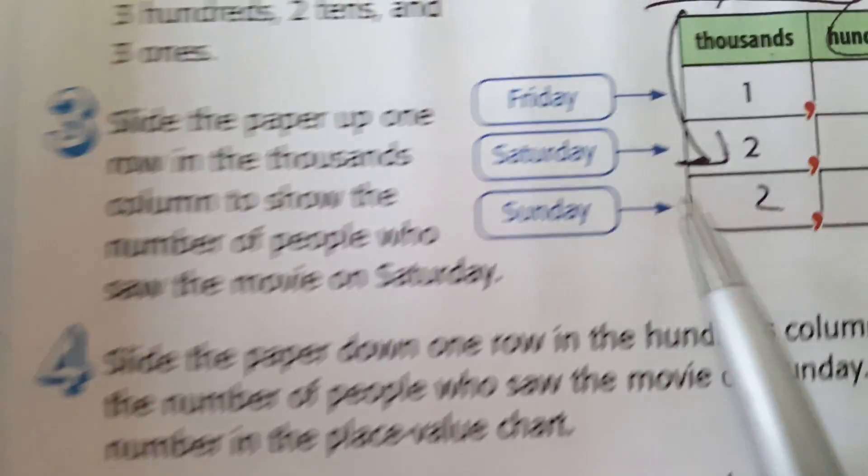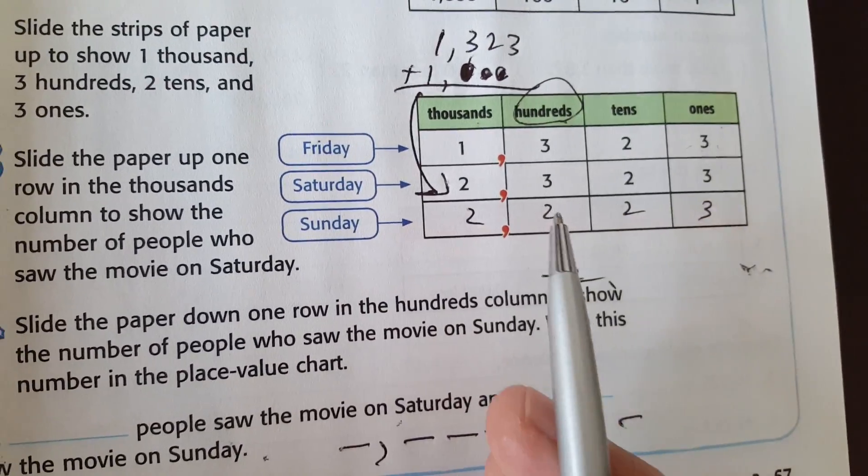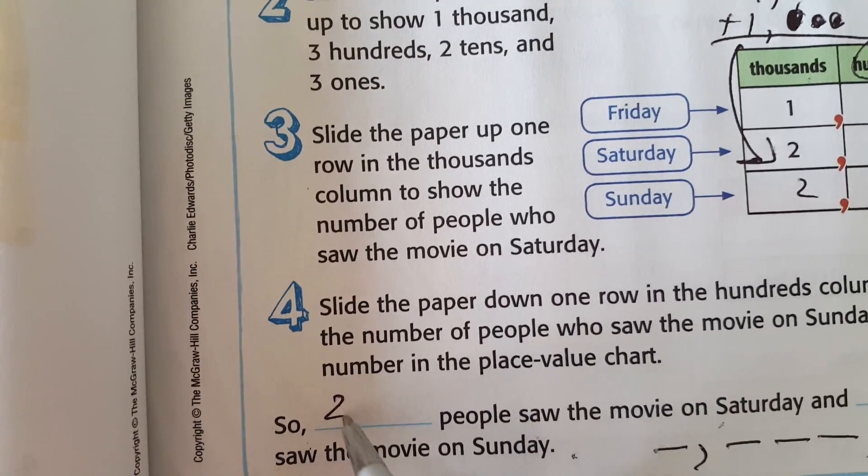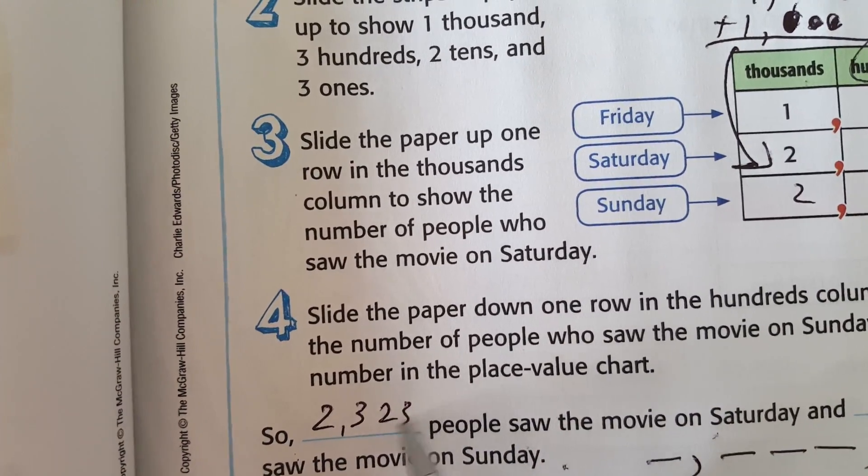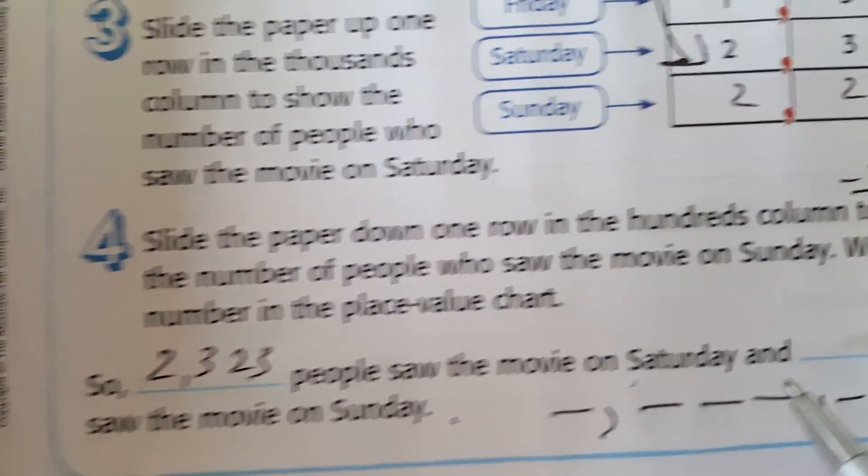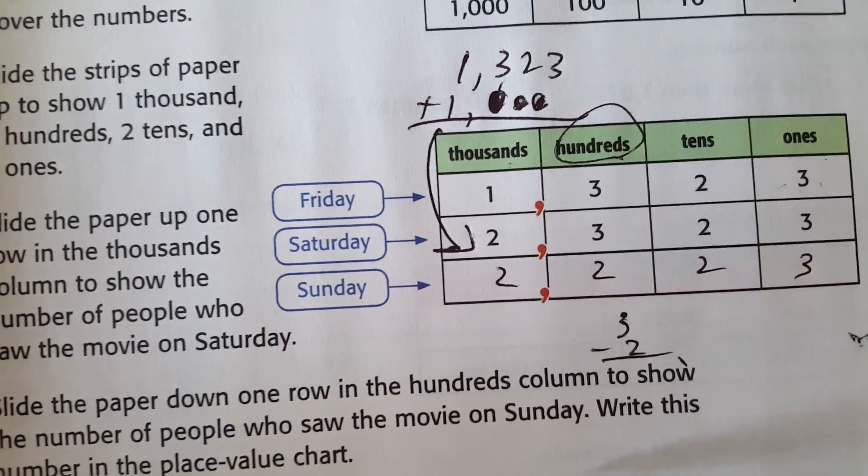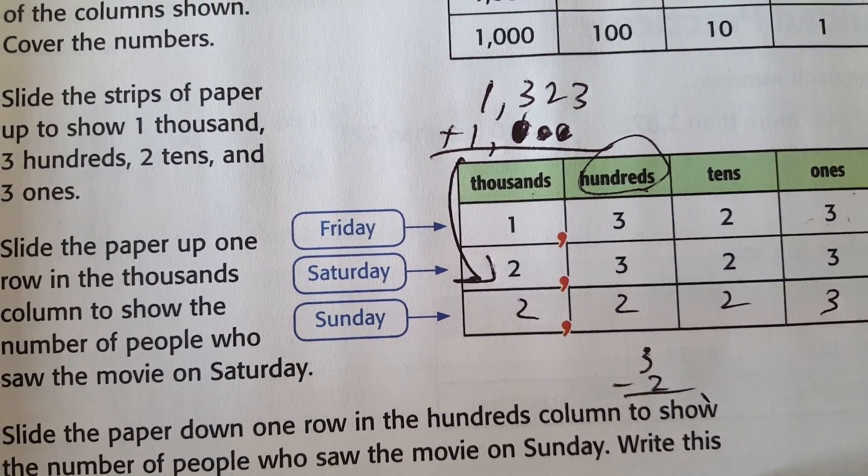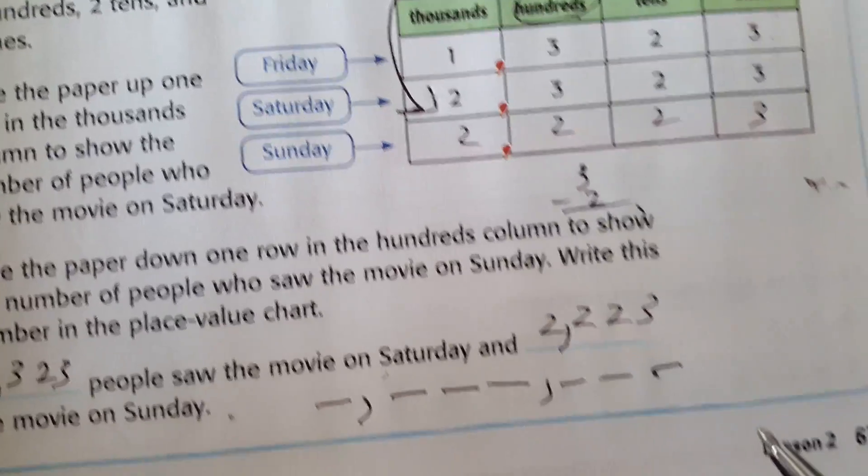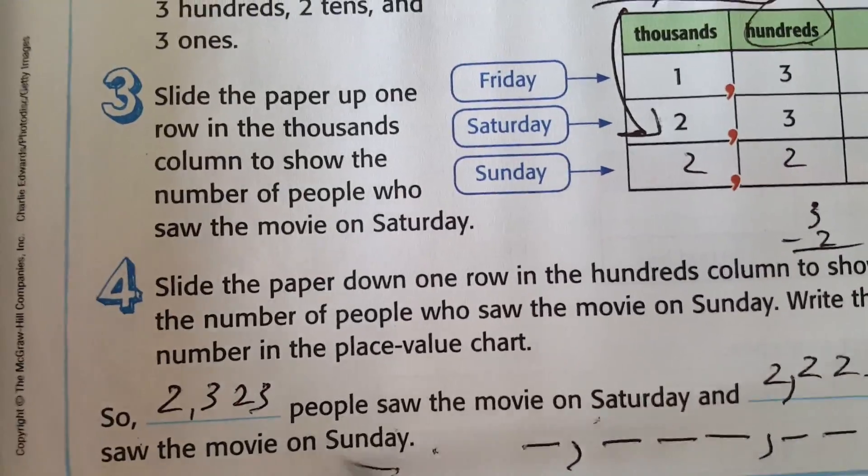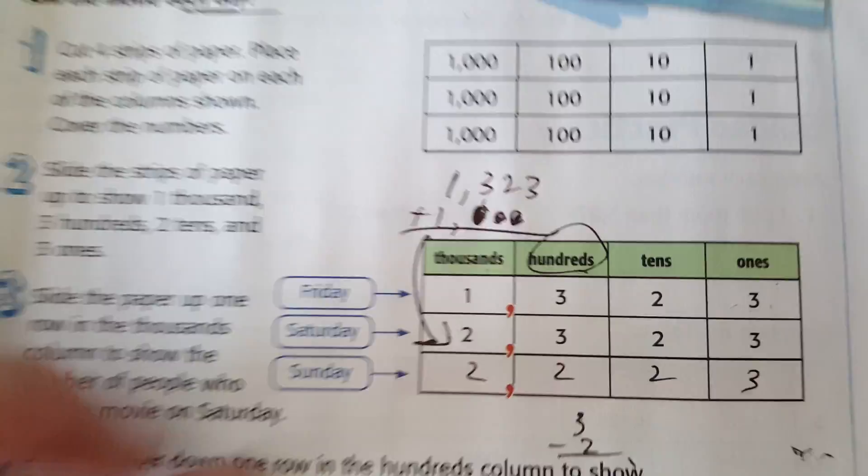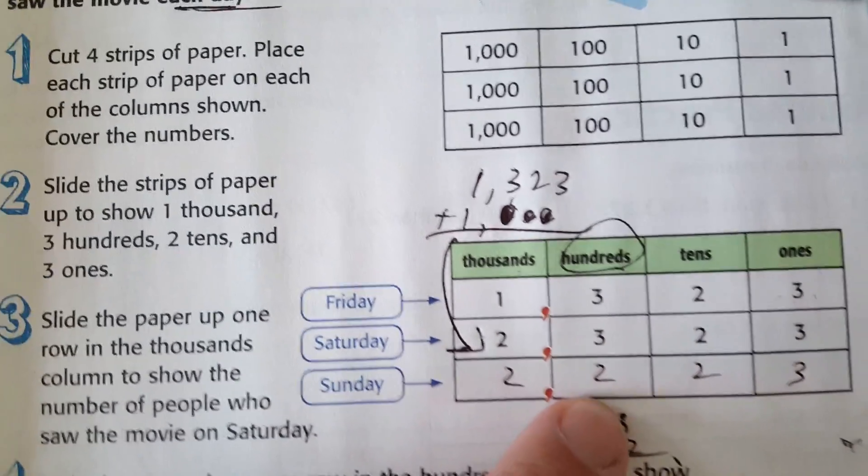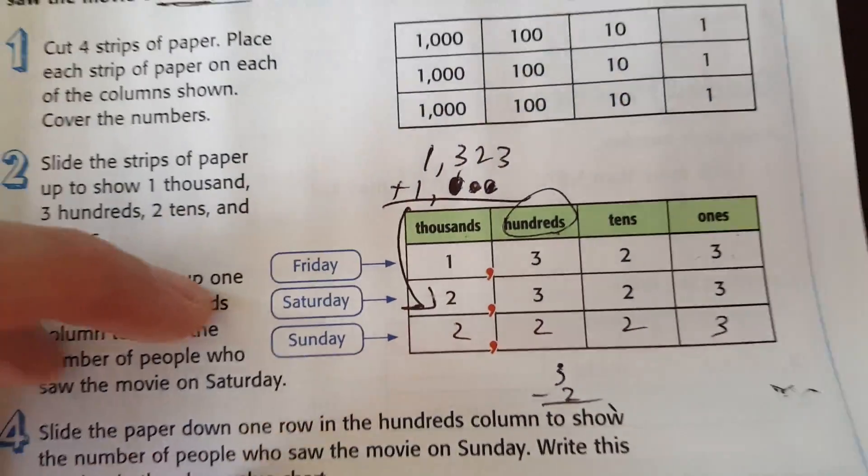So blank people saw the movie on Saturday. We see the number right there. 2,323. And blank saw the movie, 2,223, on Sunday. There it is. Patterns. So you're either going up or down. Just depends where they're at in the place value. Three minutes. Let's go to another one.